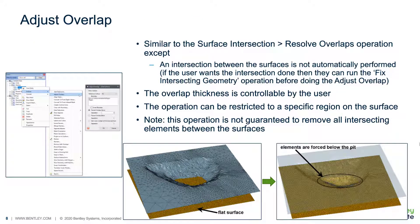It is common that there may be overlap between two surfaces that need to be resolved. The Adjust Overlap function allows such resolution. Two surfaces can be selected and the software allows corrections to the overlapping regions. An example is where a geological surface might intersect an open-pit surface. The user may want to adjust the geologic surface to wrap underneath the elements for the open-pit, and the Adjust Overlap function can be utilized to ensure the elements wrap underneath the pit.